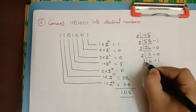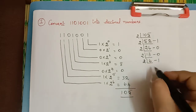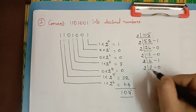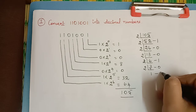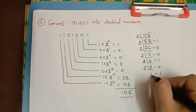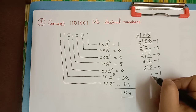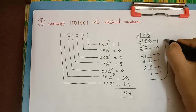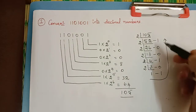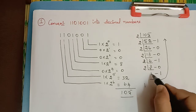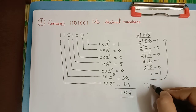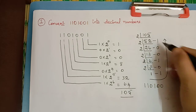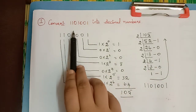Now 6 divided by 2 is 3, and the remainder is 0. Then 3 divided by 2 gives 1 with a remainder of 1. Now when we arrive at 1, we have to stop the division and write the binary number from the last quotient back up through the remainders. So the binary number corresponding to 105 is 1101001, which matches our original binary number.